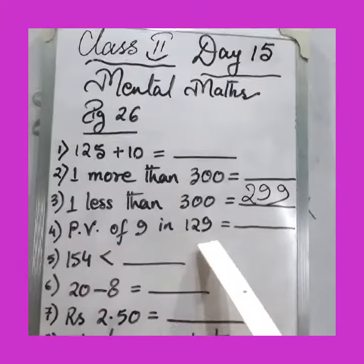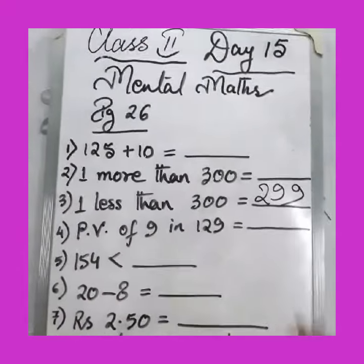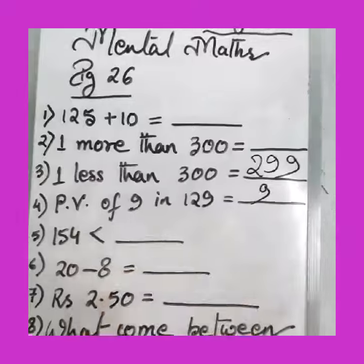Place value of 9 in 129. What is it? Only 9, because 9 is at ones place.